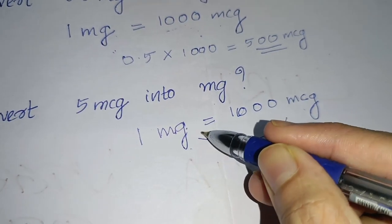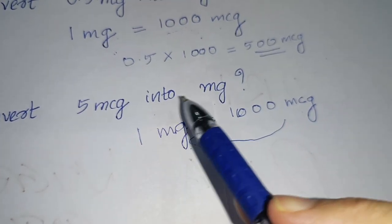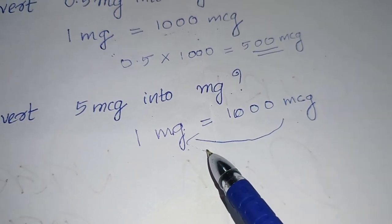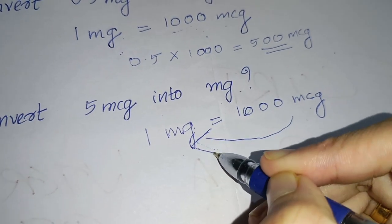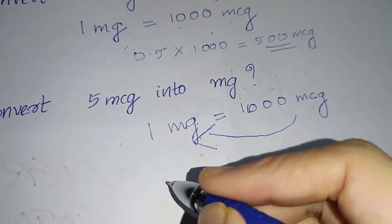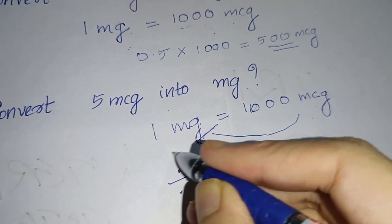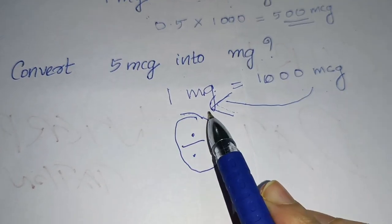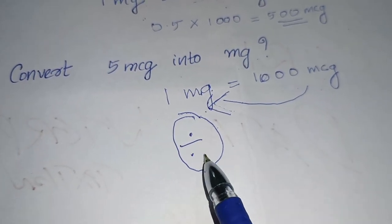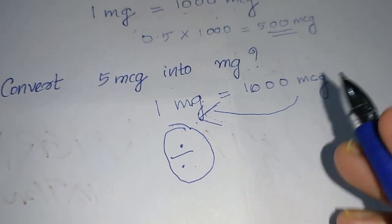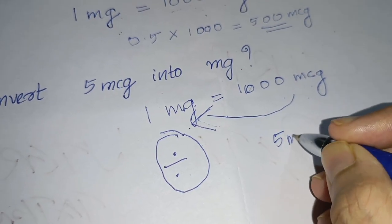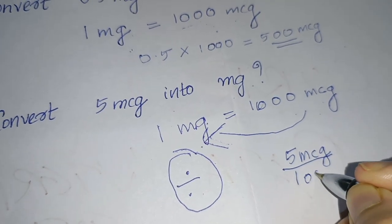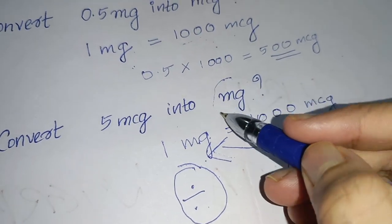You have to reverse it. Microgram you have to convert into mg. That is in the question. So right side to left side. Whenever you are reversing, what you have to do is division. Now onwards, don't forget about this. Whenever you are doing conversion, reversion, you have to do division. So here 5 mcg divided by 1000, you can do. Then you will get answer in mg.